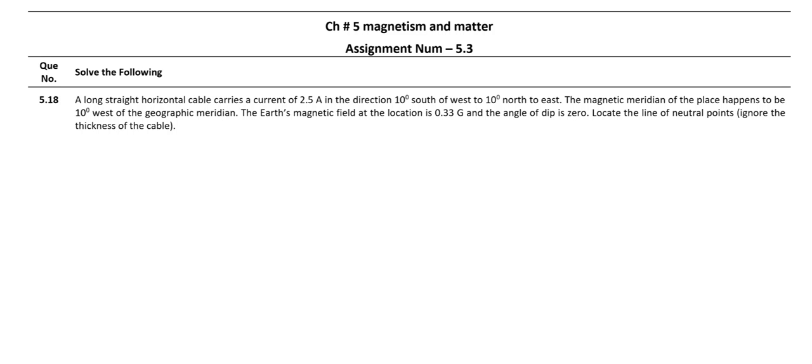We need to locate the line of neutral points. What do we mean by neutral points? These are the points where the resultant magnetic field is zero. Here we have two magnetic fields: the field due to the wire and the field due to Earth. So if the two are opposite at some point and also equal, you will have resultant magnetic field zero. Those points are called neutral points, and we are supposed to find out where they are in this situation.